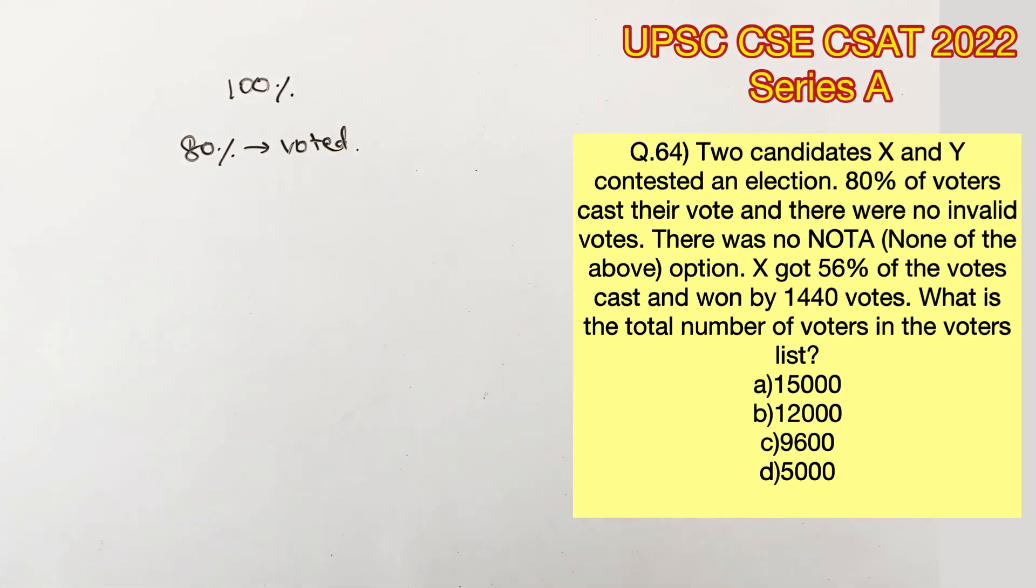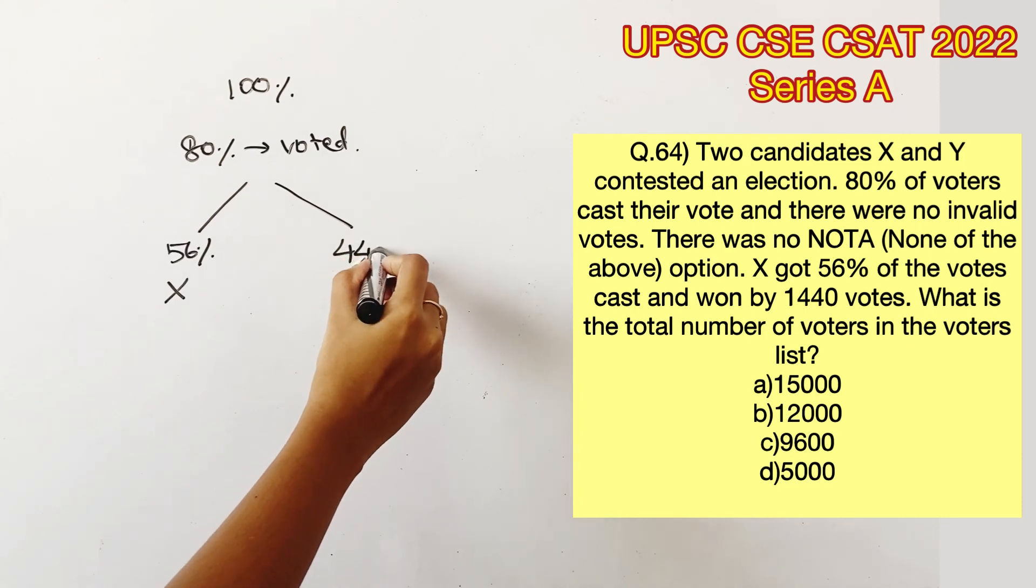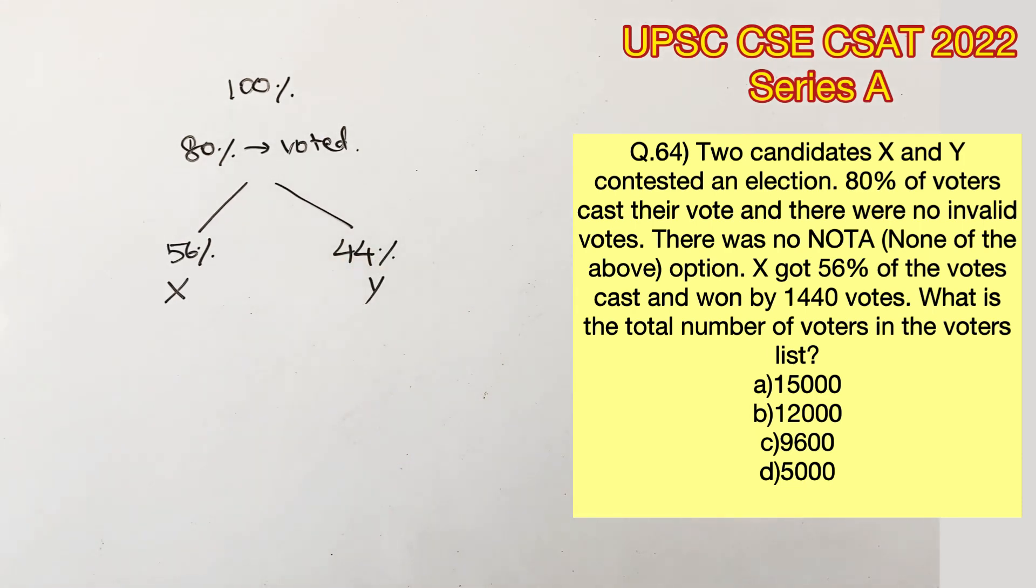So out of the two candidates X and Y, X got 56% of the votes, which means Y got the remaining percent of votes, that is 44%. Note that these percentage values correspond to 80% of the total voters list.